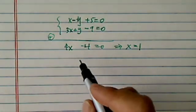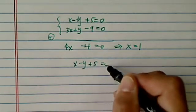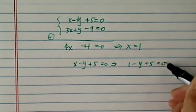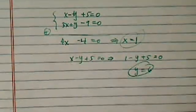That's an easy one. And then let's plug it back in there, so x equal to 1 into this equation, so we have 1 minus y plus 5 equal to 0. Obviously y is equal to 6. So 1 and 6.